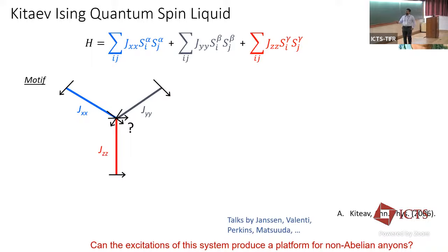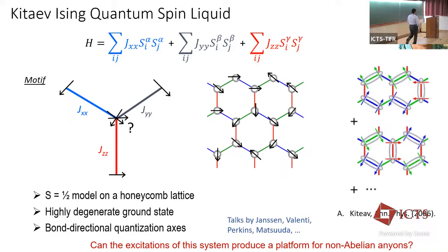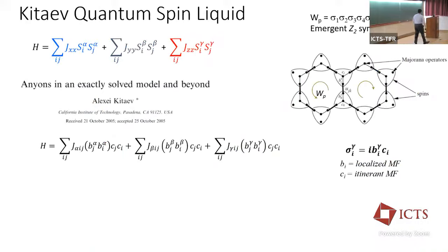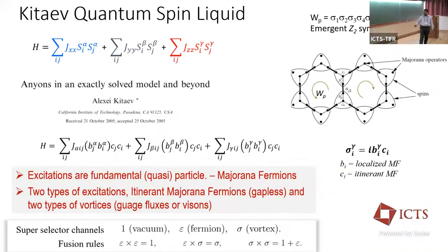Essentially we have three Ising interactions on this Y-like motif. The spin in the middle is completely frustrated about which direction it wants to point. If you take that Y motif and extrapolate it, you get a honeycomb lattice where all the spins are frustrated. It turns out the ground state is a quantum spin liquid — a superposition of all these Ising dimers. This was the brilliance of Alexei Kitaev. He was able to solve this Hamiltonian by writing it entirely in the basis of Majorana fermions, finding an emergent conserved flux sector with emergent Z2 symmetry, and then solving it analytically.